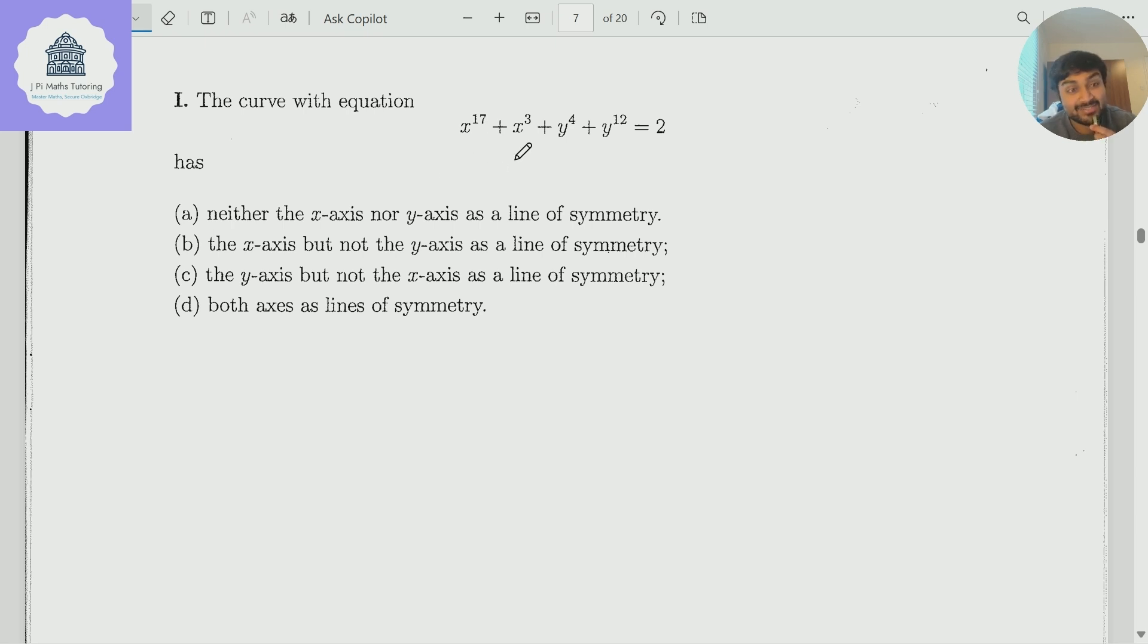The curve with the equation x to the 17 plus x cubed plus y to the 4 plus y to the 12 equals 2 has, and then we've been given four options here, basically asking us where the lines of symmetry are, or in particular, does it have lines of symmetry in the x-axis slash y-axis?